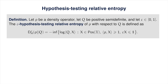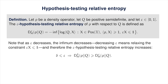As epsilon decreases, the constraint that epsilon times x is less than or equal to the identity becomes more relaxed, meaning more choices of x satisfy the constraint. That means the infimum goes down, so the negative infimum gets larger. In short, decreasing epsilon makes the epsilon hypothesis testing relative entropy larger — a stronger and more sensitive notion of divergence for smaller values of epsilon. This is consistent with the smooth max relative entropy, where decreasing epsilon means less freedom to smooth, resulting in a larger value. When epsilon equals zero, we get exactly the max relative entropy for both measures.